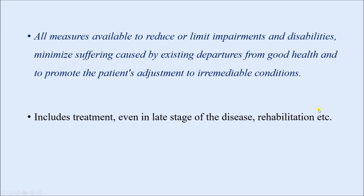In tertiary prevention, we are trying to minimize or reduce the impairments and disabilities that have already taken place. We cannot undo them, but we can minimize their level. We also try to minimize the suffering of the patient due to departure from good health, and ensure the patient can adjust to a condition that is no longer remediable. Tertiary prevention includes treatment even in the late stage of the disease and rehabilitation, because treatment in the later stage can minimize suffering, minimize the level of impairment and disability, and rehabilitation plays a key role as well.